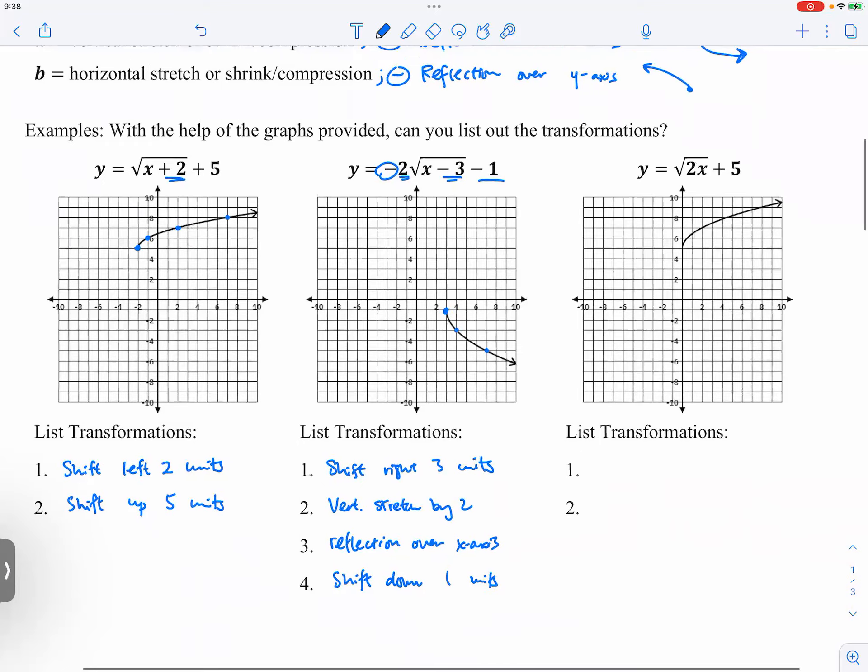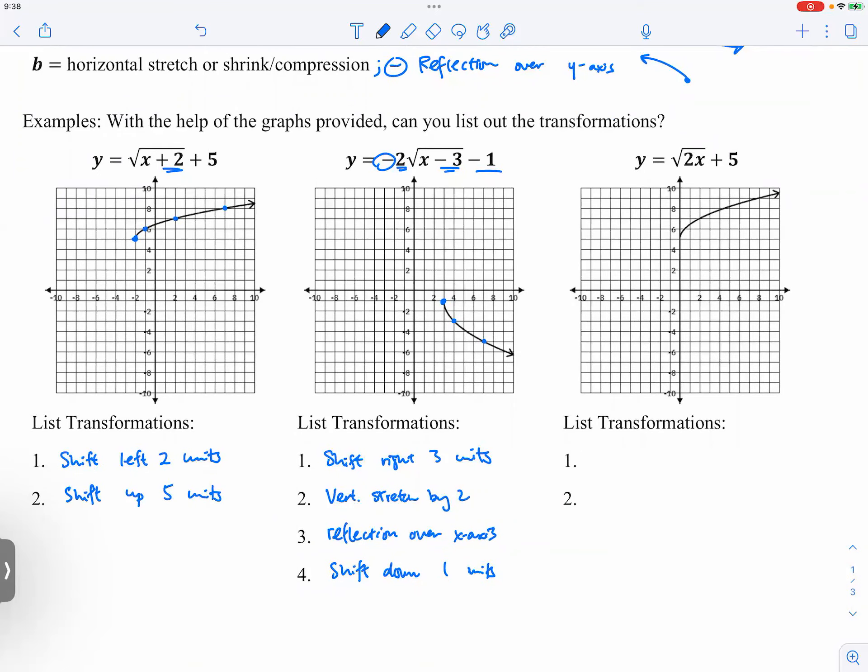And then the graph to the right. We can clearly see it's going to shift up five units, and we put it dead last. But now what does that two mean? That two always causes some trouble.